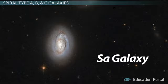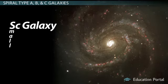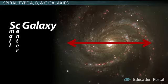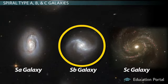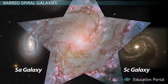To help remember all of this, use one simple trick: think of a spiral type C galaxy as a "small central" galaxy, meaning it has a small central bulge. Knowing that, the disk has to be the exact opposite — really big — and because its disk is large, there is a lot of interstellar gas and dust and lots of star formation. Spiral type A is the opposite of type C, and spiral type B is simply the middle ground between the two.